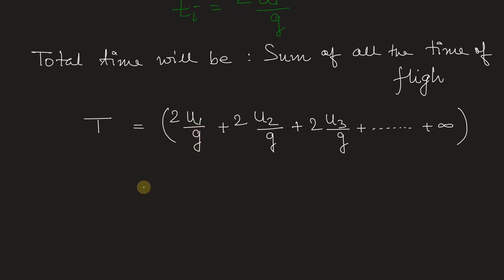Now, 2 by g is common in this, in this equation. So let's take 2 by g outside and we know here this first term will be u1 plus u2 is 0.8 times u1.